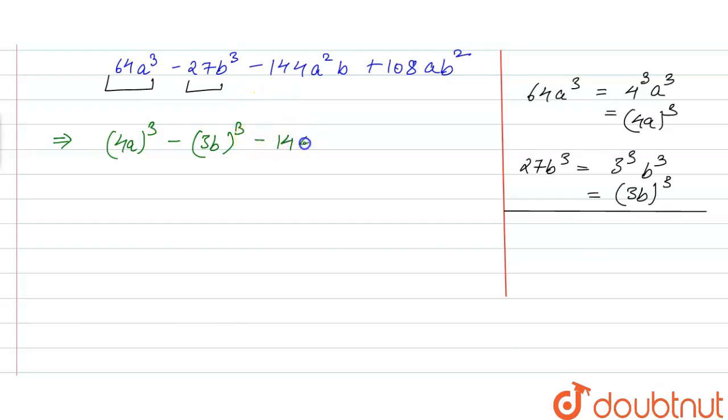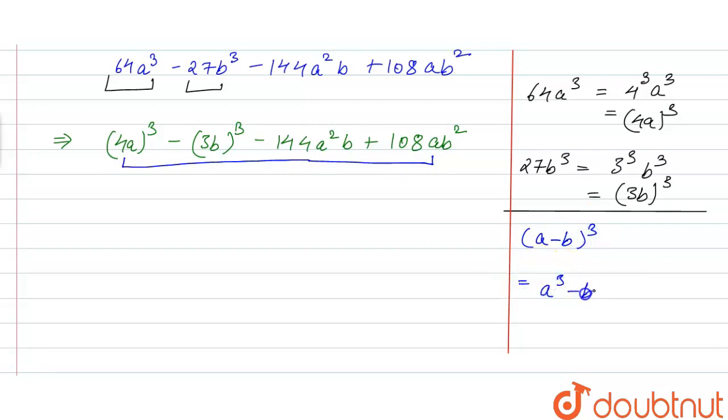If we see this whole term clearly, we have an identity of (a-b)³ which is equal to a³ - b³ - 3ab(a-b). With possible signs we have this identity, and we have writing this (4a)³, this will be a³.